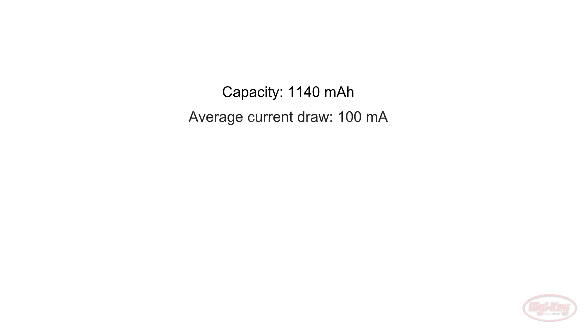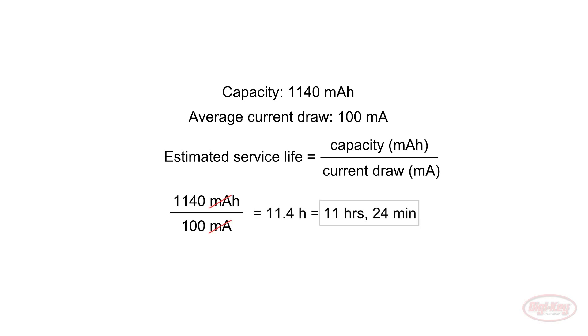Then, let's say our device pulls 100 milliamps on average. We can estimate the battery's life by dividing the capacity by the expected current draw. So, we divide 1,140 by 100. We see that the milliamp units cancel and we're left with 11.4 hours, which is equal to 11 hours and 24 minutes.